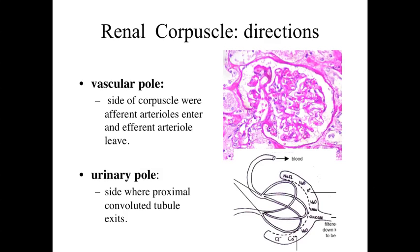The renal corpuscle has two poles. The vascular pole is where the capillary bed attaches to the afferent arteriole - blood flows in through the afferent, things are squeezed out through the filtration barrier, and blood leaves through the efferent arteriole. At the opposite end is the urinary pole, where the proximal convoluted tubule leaves Bowman's capsule. So blood enters and exits at the vascular pole, while the raw filtrate drains into the proximal convoluted tubule at the urinary pole.